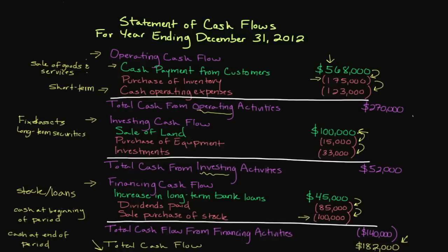If you were to look at the statement of cash flows a year later, the cash at the beginning of the period would be this ending figure, because what we end with one year is the beginning cash for the following year. This shows how the statements are streamlined together and build upon one another. Those are the three sections of the statement of cash flows — hopefully that clarifies what type of information is included in each section.